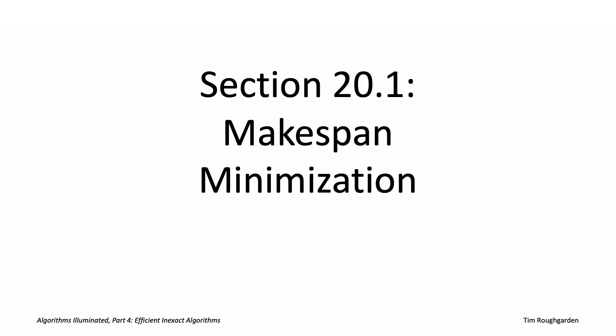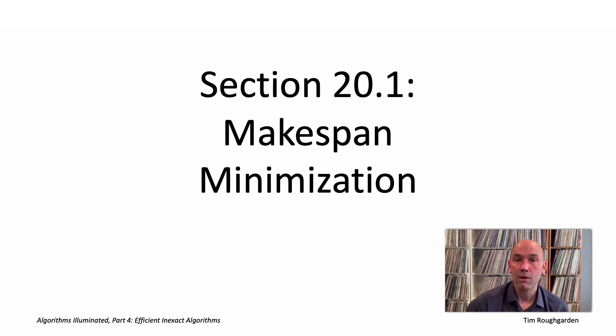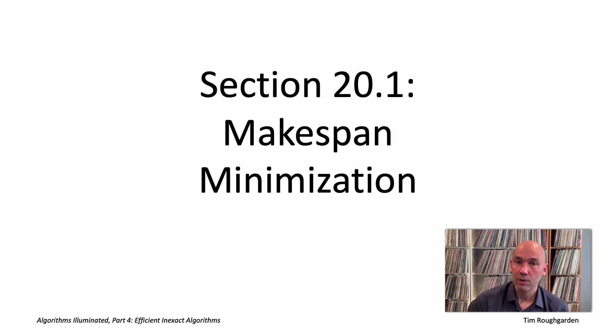Hi everyone, and welcome to the portion of the video playlist that accompanies Chapter 20 of the book Algorithms Illuminated, Part 4. This is a chapter about efficient, inexact algorithms.